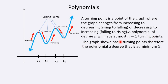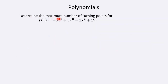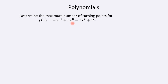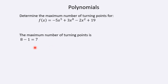Determine the maximum number of turning points of this polynomial. The degree of this polynomial is the degree of the highest term. In this case, the polynomial has degree 8, so this is the leading term. Therefore the maximum number of turning points is 8 minus 1, or 7. That's how turning points work.